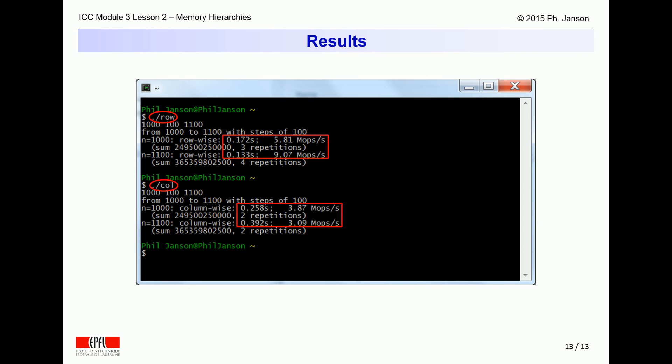By contrast, the column by column program completes these two steps in two to four tenths of a second, thus achieving respectively only three or four million operations per second. The programs being identical except for their order of calculation, the difference is due exclusively to cache locality effects, which shows that such locality effects just cannot be ignored by programmers. Even a spreadsheet user is a programmer.